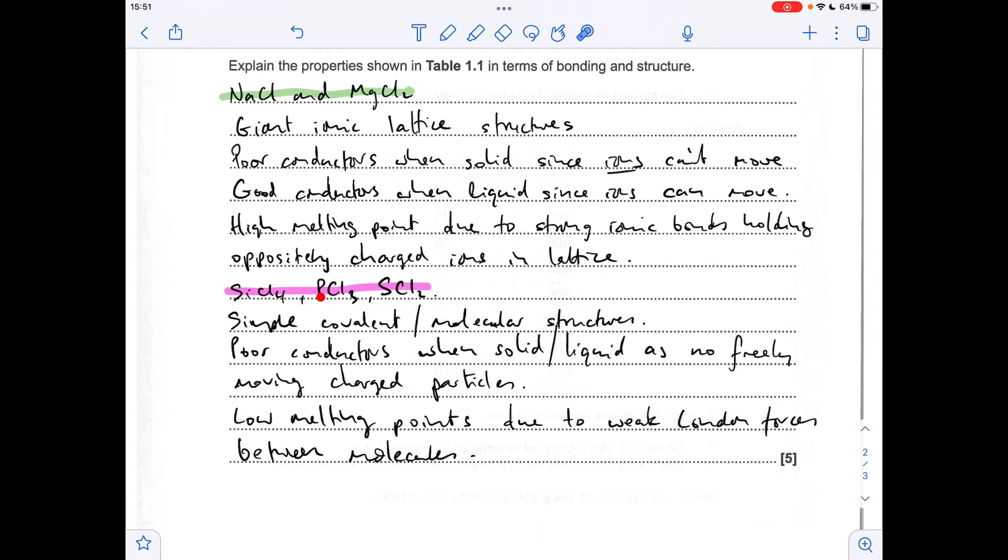And finally, moving on to the chlorides of silicon, phosphorus and sulphur, they've all got simple covalent or molecular structures. So they're poor conductors when solid and liquid, because they don't have any freely moving charged particles. And they've got low melting points, much lower than these two, because they have weak London forces between the molecules.